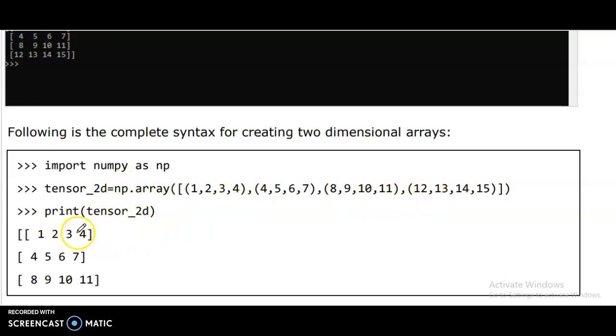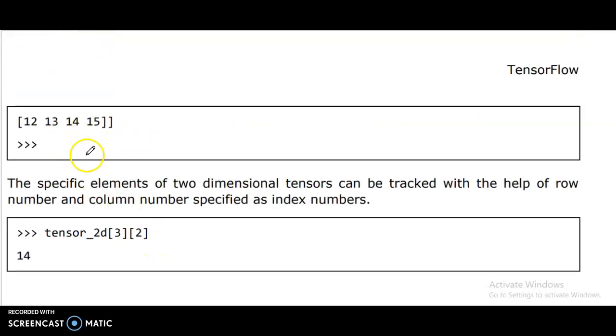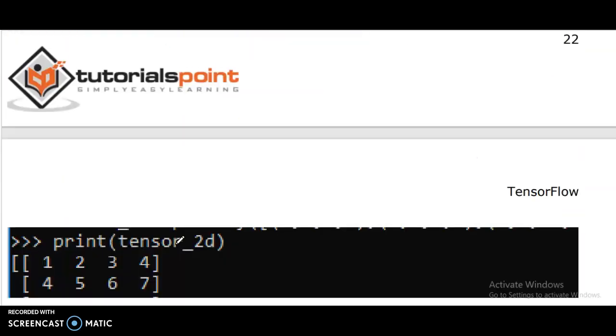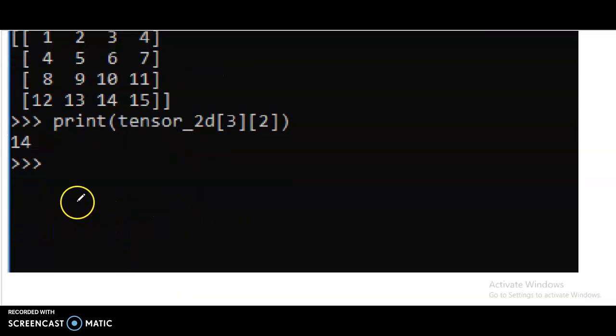Print tensor underscore 2D for output. The specific elements of two-dimensional tensors can be tracked. It uses the row number and column of the specified index number tensor 2D[3, 1].